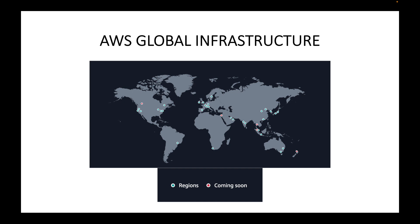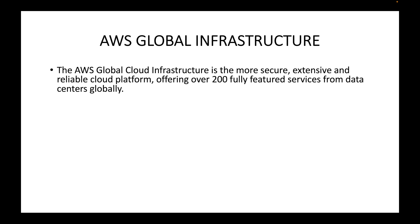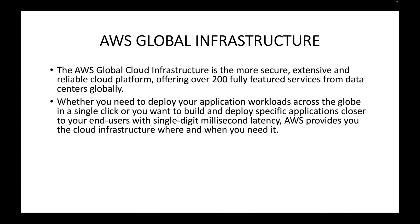The regions are available all over the world — we have regions in the US, Europe, Australia, and India, likewise all across the world. These regions are nothing but collections of data centers where the physical resources are available. The AWS cloud infrastructure is the most secure, extensive, and reliable cloud platform, offering 200 plus fully featured services from globally available data centers. Whenever you want to deploy application workloads across the globe in a single click, or build and deploy applications closer to your end users who need single-digit millisecond latency, AWS provides you the cloud infrastructure where and when you need it.